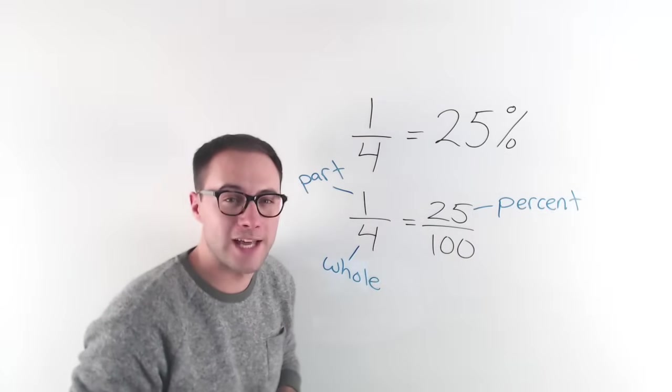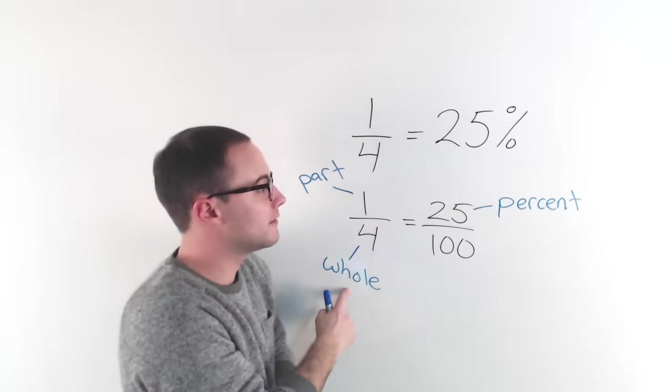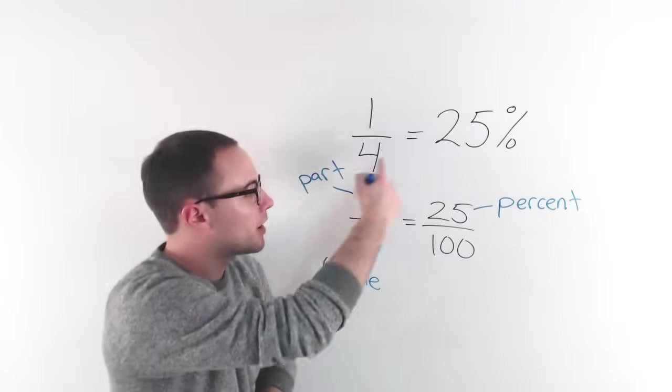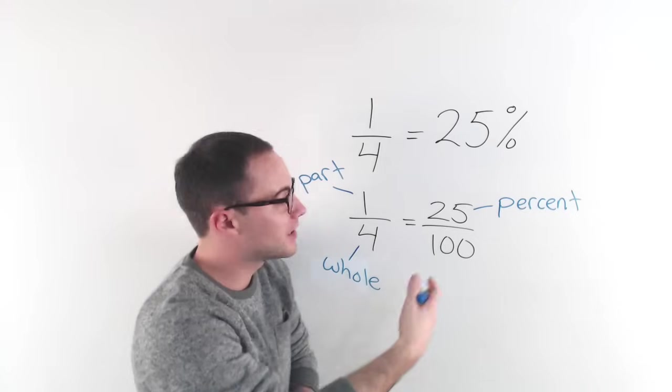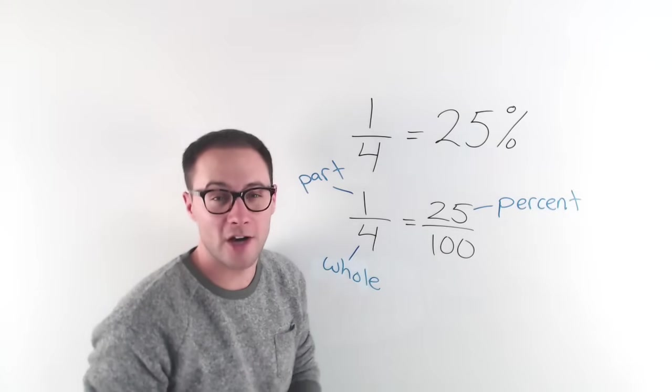So we're going to do three examples, each one trying to find a different part of this proportion. Not these same numbers, different numbers, but different part of the proportion. So let's get started on example one.